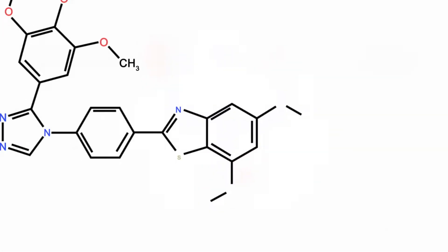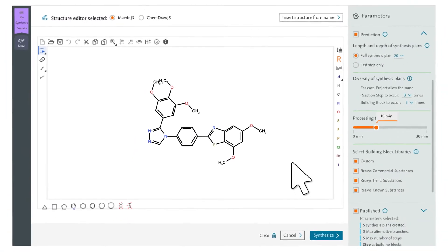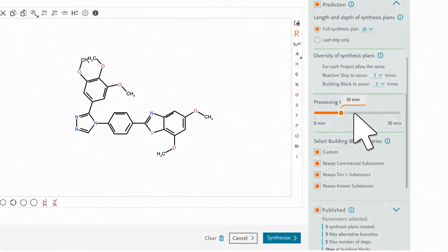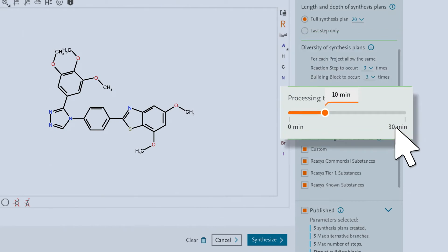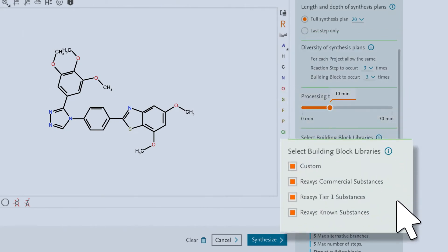The ReAxis interface is user-friendly and intuitive. Edit retrosynthesis parameters for diversity, speed, and choose libraries of building blocks to meet your needs.